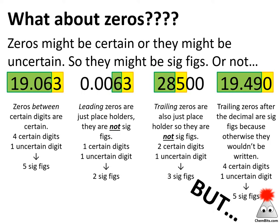The big challenge when we're doing sig figs comes down to zeros, and we've got a few different types of zeros to work with. Start with the easiest: what about a zero that's in the middle of a bunch of other numbers? That zero has to be significant because if the numbers on both sides of it are known, then that zero must be known as well. So zeros between digits are certain digits and those count as sig figs.